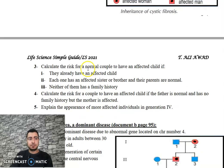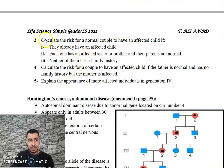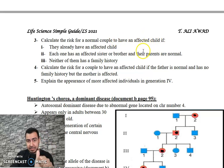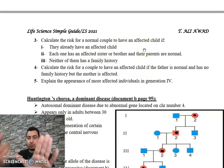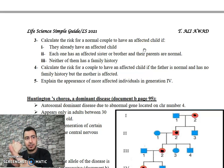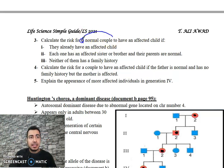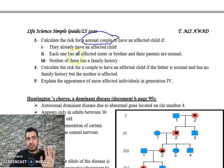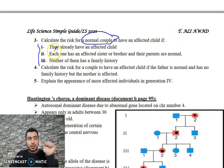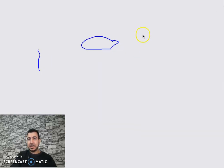Calculate the risk for a normal couple to have an affected child, given that they already have an affected child.